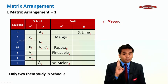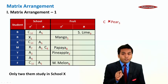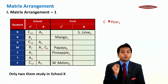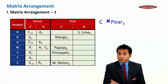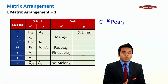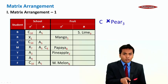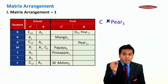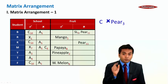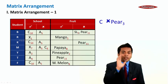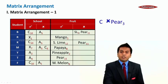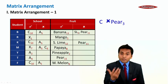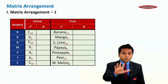Only two students study in school X: R and M. Y and T are the only two in school A. That means the remaining three — B, K, and F — must study in school C. Since students in school C do not like pear, B and K get pear in their cross column. F already has watermelon. The only student left without a fruit who could like pear is T, so T likes pear. B does not like sweet lime, so K must like sweet lime, and the only fruit left — banana — goes to B.